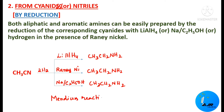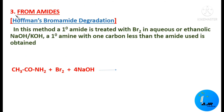So by using methyl cyanide on reduction in the presence of lithium aluminium hydride, Raney nickel, or sodium in ethanol, it is possible to produce ethylamine. The next method is from amides, otherwise called Hoffmann's Bromamide Degradation process.